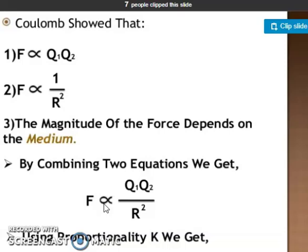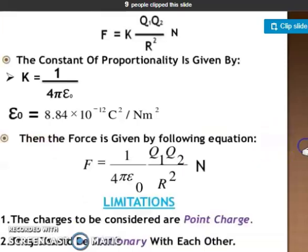F is equal to K times Q1Q2 divided by R², and the unit is N for Newtons. If we have two charges, then we have Q1 and Q2. If we have more charges like Q3, Q4, then we add them accordingly.